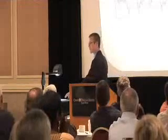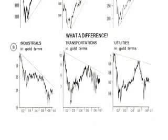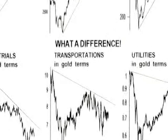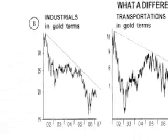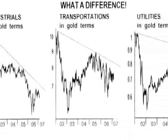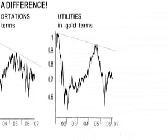However, if you divide — as we looked at the chart earlier — their price performance by the price of gold, which we consider real money, you actually have declining trends in all three averages.